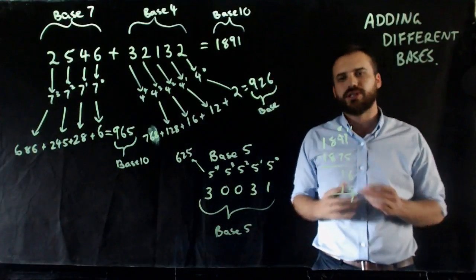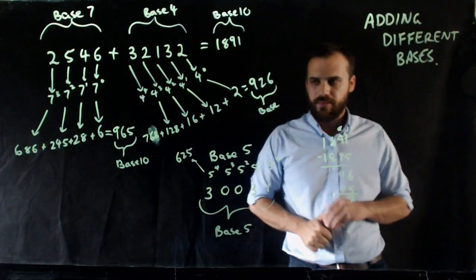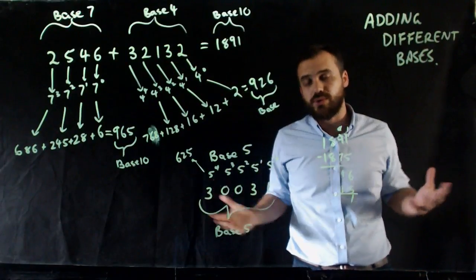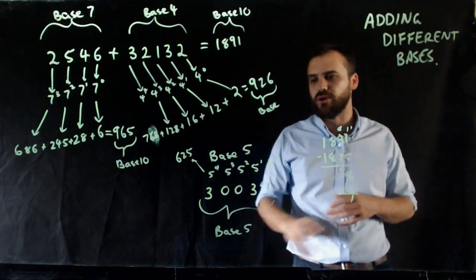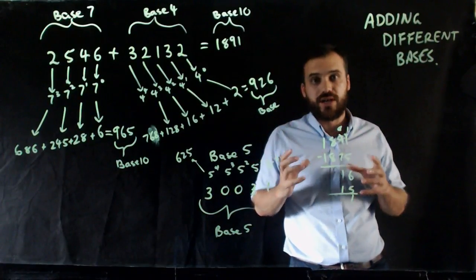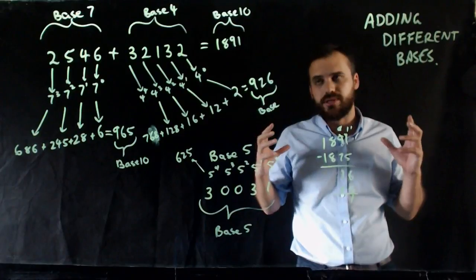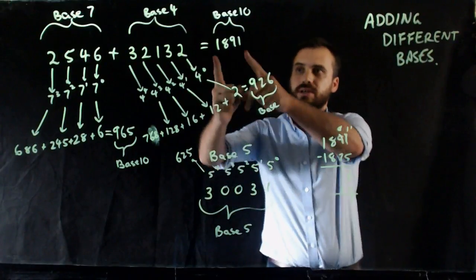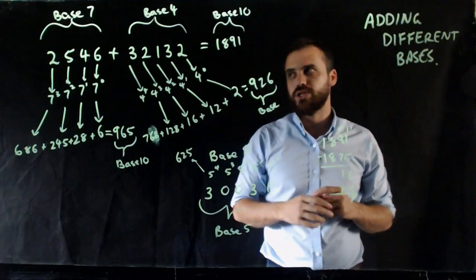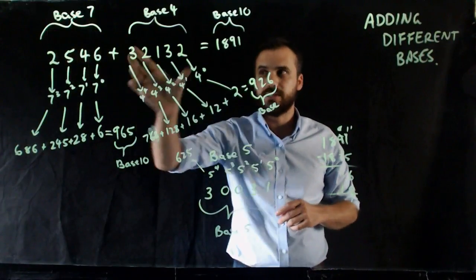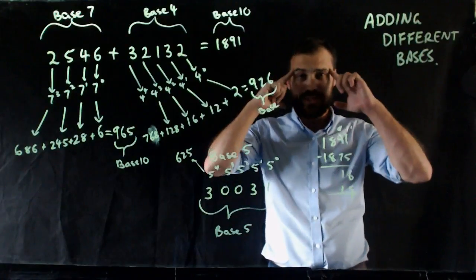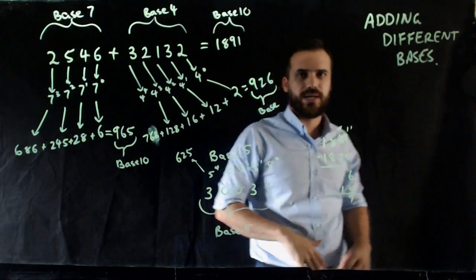Your brain should really be hurting now because all of these bases — base 7, base 4, base 5 — we're not used to working in them, so it looks really odd. You look at that number and immediately think of 30,000 and how big that number is, but it's actually only 1,891 — which is the base 7 number plus the base 4 number. Really confusing. Adding different bases — give it a try!